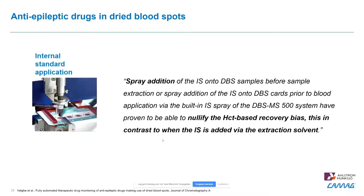On the other hand, if you add the internal standard to the extraction solvent, you can create an additional bias, because depending on hematocrit there could be another extraction recovery. This bias is nullified when you spray the internal standard on the DBS before extraction.